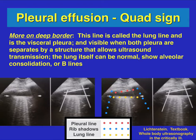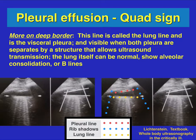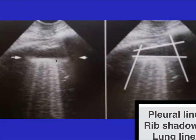On the quad sign, the deep border is called the lung line and represents the visceral pleura. It is usually visible when both pleura are separated by structures that allow ultrasound transmission, such as fluid. The lung itself can be normal, show alveolar consolidation, or even B-lines. In the image shown here, you can see B-lines, the lung, the pleural fluid, and the rib shadows.